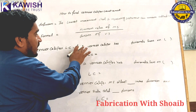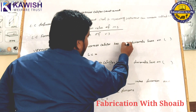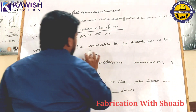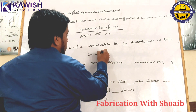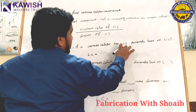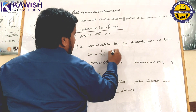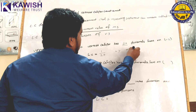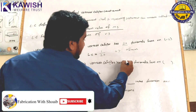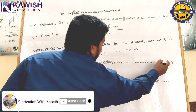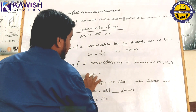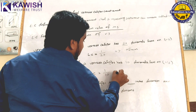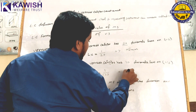For vernier caliper least count: if a vernier caliper has 20 divisional lines on the vernier scale, least count equals minimum value of main scale 1 divided by 20 divisional lines, giving 0.05 mm. If a vernier caliper has 10 divisional lines on the vernier scale, least count equals 1 over 10, equal to 0.1 mm.